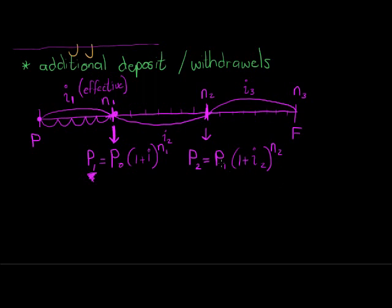But p1 is already equal to that, so p1 can just be replaced by this. Sorry, that was i1. So (1 + i1) to the power of n1, times (1 + i2) to the power of n2. And I think you might just see where all this is going.